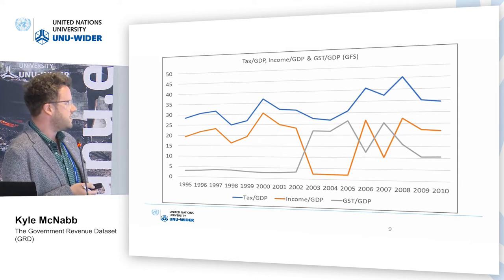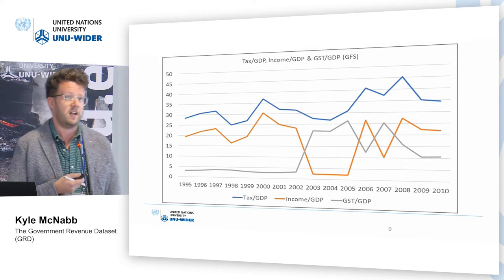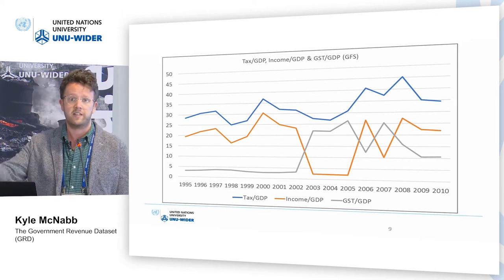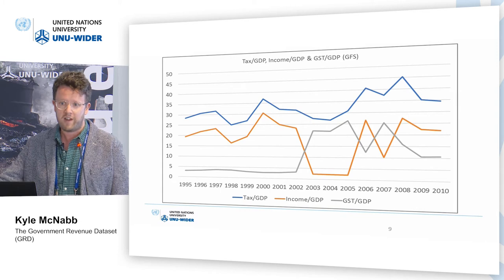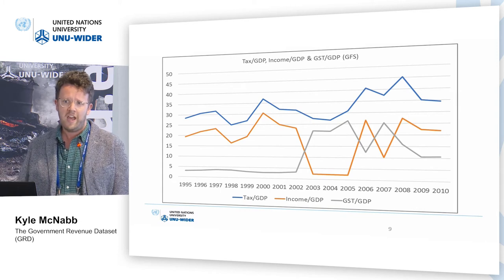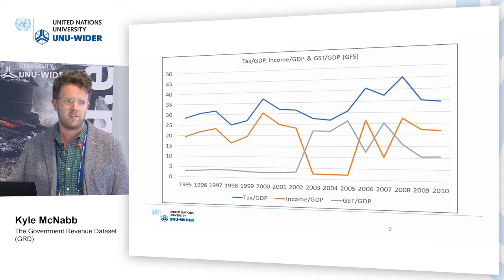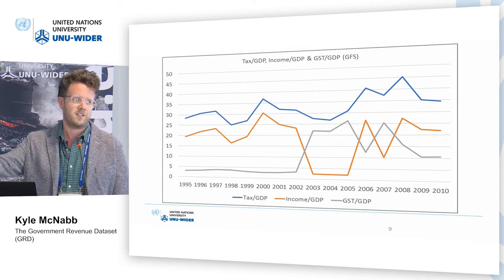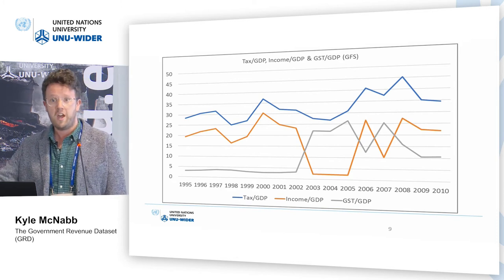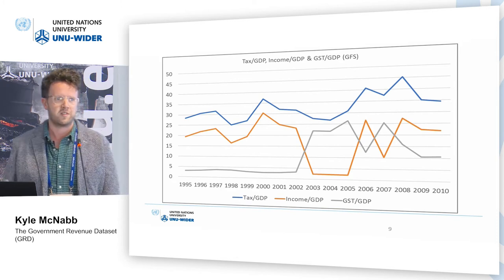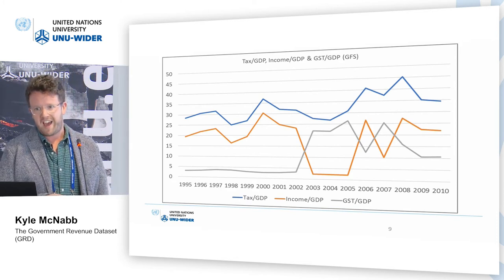My understanding is that this is actually how the Algerians presented the data to the IMF, and in that sense it is technically correct. But if you attempt to do any research with this — as soon as you plug it into a time series or panel regression — you're going to come to some very misleading research results.